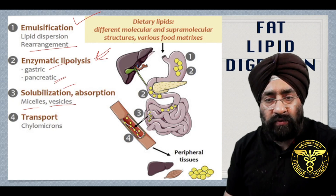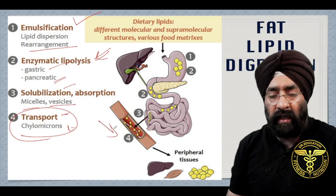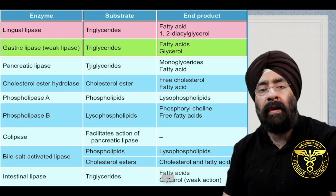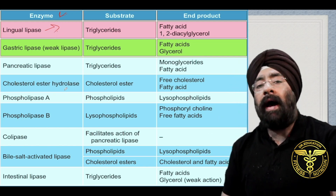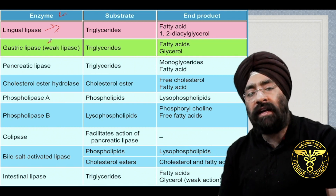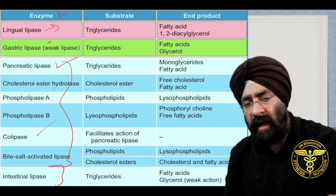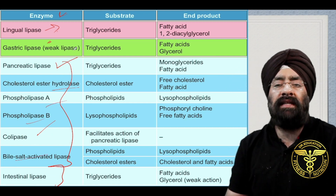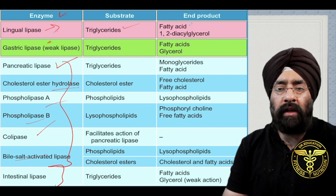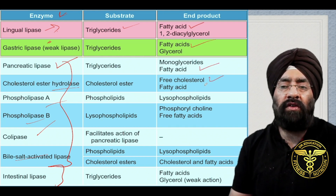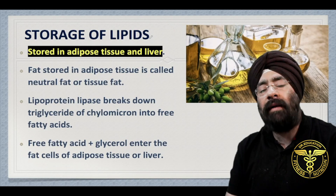After breakdown, fat is absorbed into the blood. In the small intestine, enzymes work including pancreatic lipases, colipases, hydrolases, phospholipase A and B, bile salts, and intestinal lipase. These break all fats — triglycerides, phospholipids — into small molecules: fatty acids, fatty acid glycerol, monoglycerides, free cholesterol, and free fatty acids.